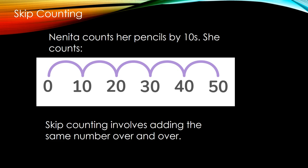First, let's talk about skip counting. Ninita counts her pencils by tens. She counts zero, ten, twenty, thirty, forty, fifty. Based on this example, skip counting involves adding the same number over and over.